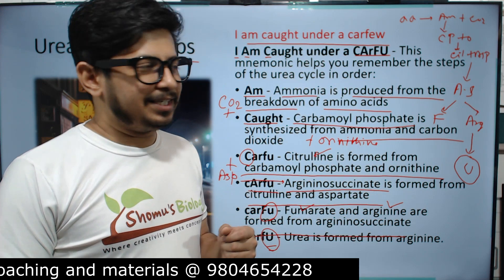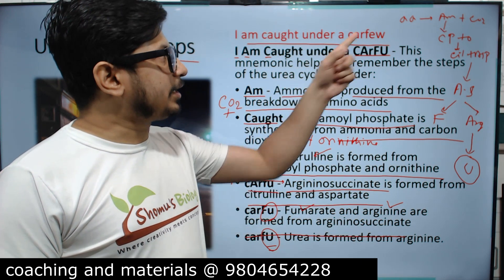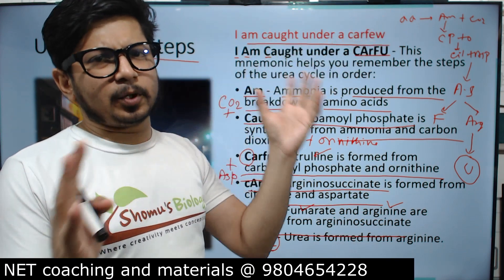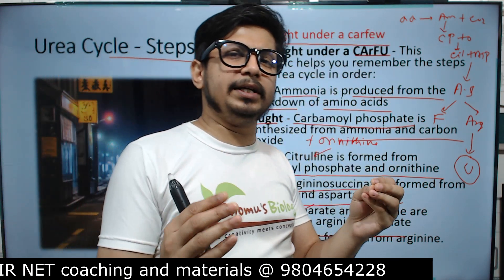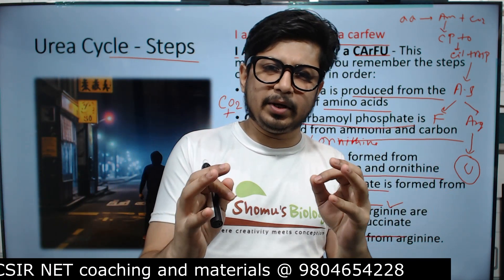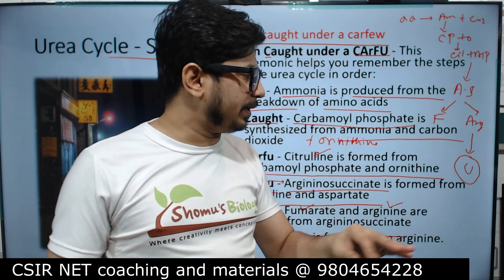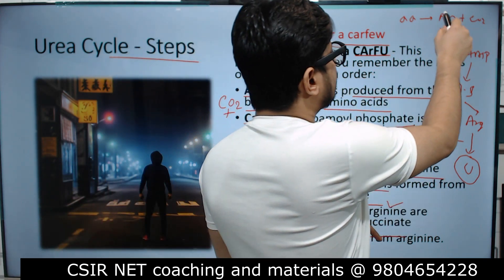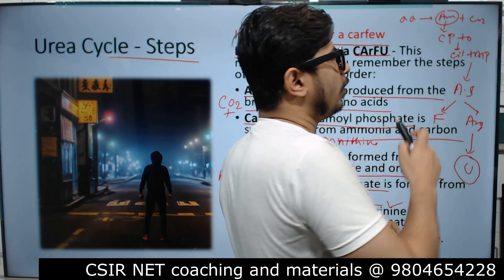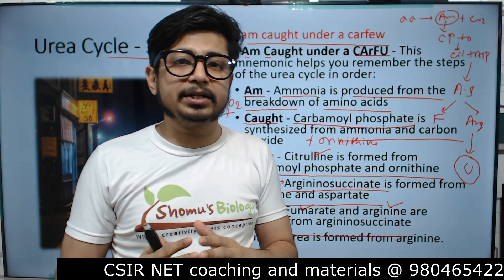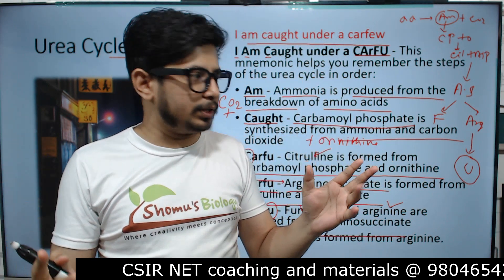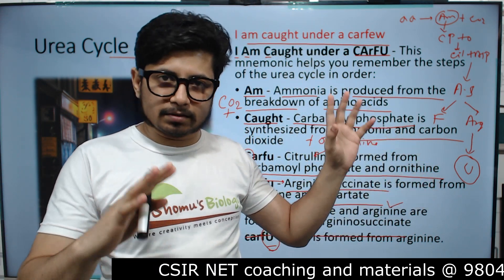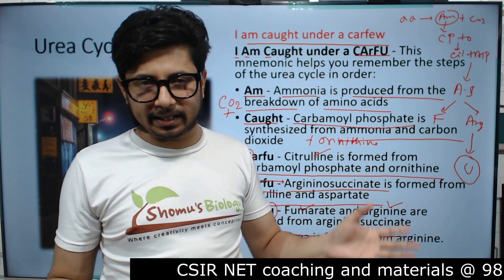Starting from amino acids and any other protein products in the body, they are degraded to ammonia first. Ammonia is the more toxic form, so the body needs to get rid of it by converting it to urea at the end — that is the urea cycle.